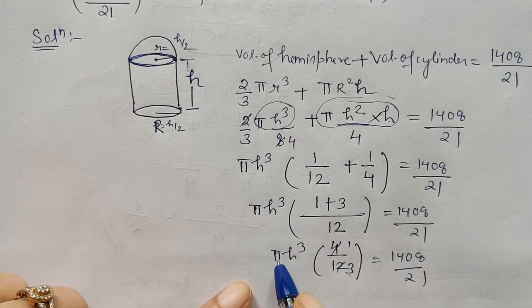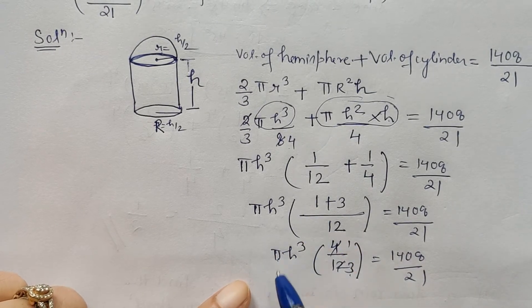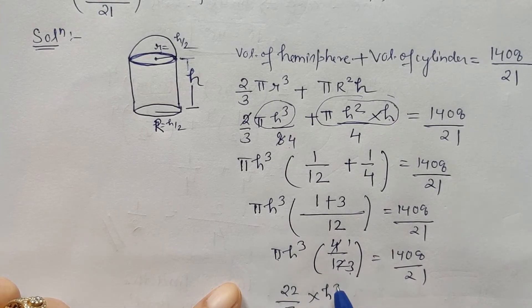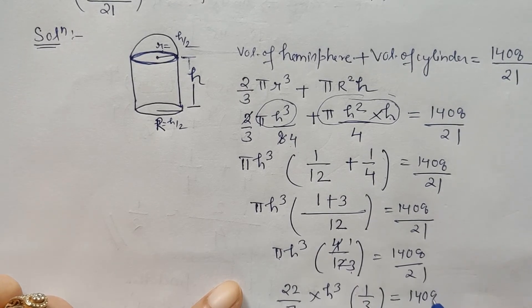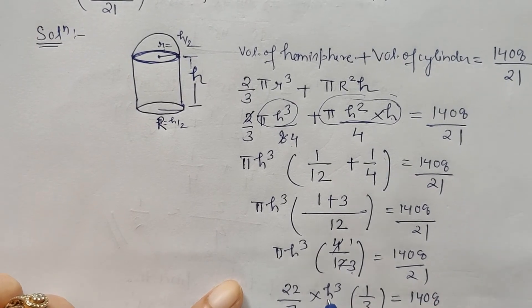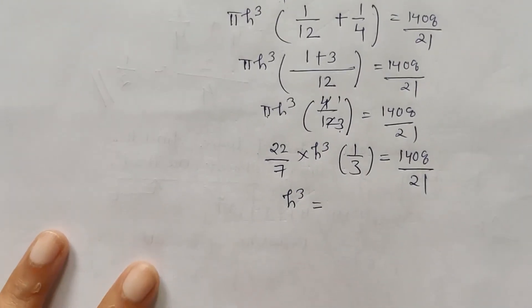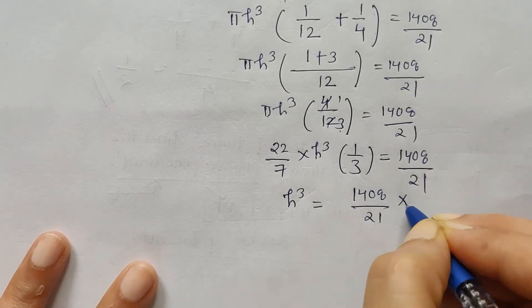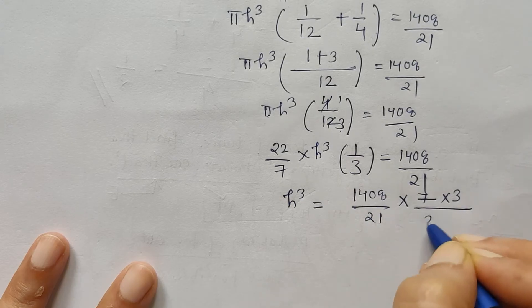4 by 12 is 1 by 3. Now 3 can be shifted on the right-hand side. Let's substitute the value of pi. In the question it is given to be taken as 22 by 7. So if I write 22 by 7 here and h cube here and 1 upon 3 here, now I will shift everything on the right-hand side so that we are left with the unknown at one side. So h cube is equal to 1408 by 21 into 7 into 3 upon 22.